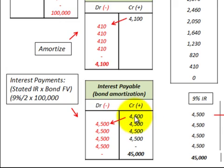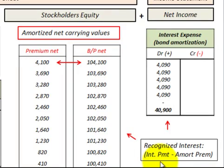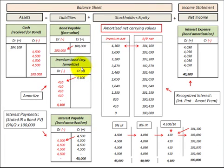Going up here, we have our interest expense — what we recognize on our income statement each period. That's based on our interest payment that we make to the bondholders minus that amortization of the premium amount. Let's calculate our premium to bonds payable amortization.